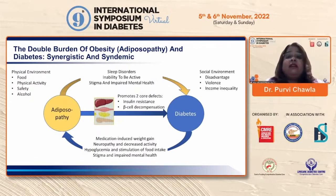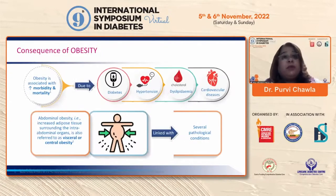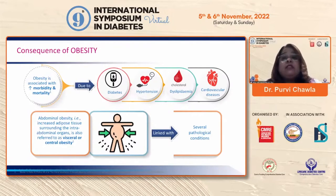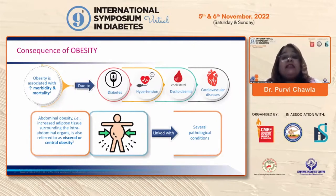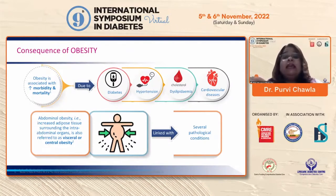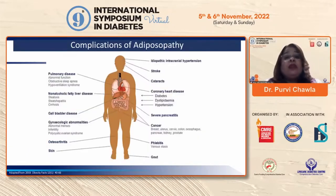Obesity is associated with increased morbidity and mortality — not just due to diabetes but also hypertension, dyslipidemia, and cardiovascular disease. In the Indian population, obesity is more linked with abdominal obesity — the extra adipose tissue around intra-abdominal organs — referred to as visceral or central obesity, and this is what leads to severe and distinct pathological conditions.